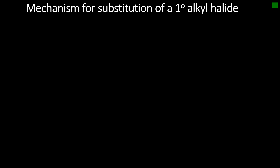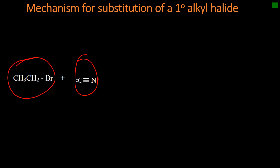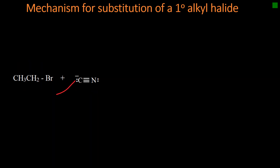Let us look at the mechanism for substitution of a primary alkyl halide. Here we have two chemical species: the cyanide ion and bromoethane. Cyanide is a nucleophile; bromoethane is the substrate. On bromoethane, there is a partial negative charge on bromine and a partial positive charge on carbon. Because of the positive charge on carbon, it attracts electrons from the cyanide ion and forms a dative covalent bond. The electrons then repel the electrons between carbon and bromine, forming a bromide ion and the nitrile molecule. Because this reaction involves a collision of two chemical species in the slow step — the only step — the mechanism is SN2, or bimolecular nucleophilic substitution.